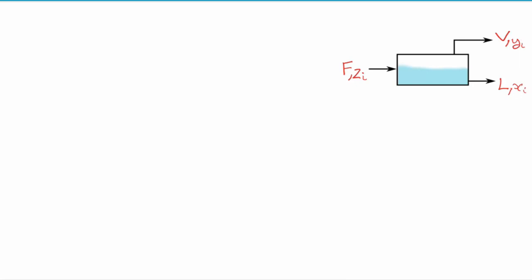We can write a mass balance around our whole flash separator to say that what goes in must be equal to what goes out, so F·zi equals the liquid plus each component in the vapor.